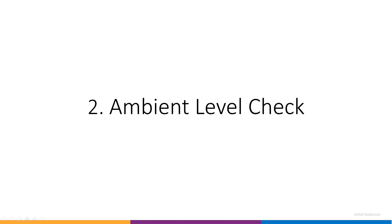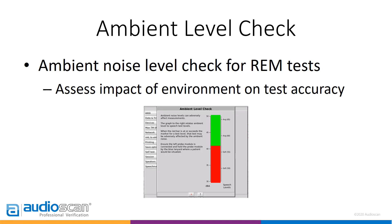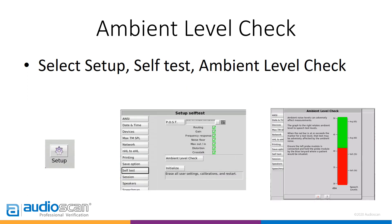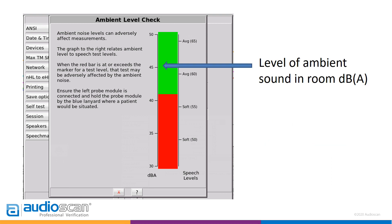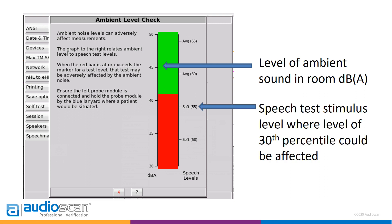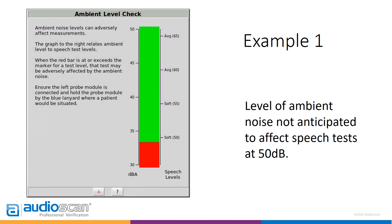Ambient Level Check. This feature is a test which measures the ambient noise level in the test environment to allow you to determine its possible impact on SpeechMap testing, particularly at soft input levels. To access the tool, open the Setup menu, select Self-Test, then click on Ambient Level Check. The red portion of the bar graph display represents the noise level in the room. The scale on the left shows the value in dB, A-weighted. The scale on the right shows the speech test level which could be affected by this noise level, based on the lowest levels of the speech stimulus, or the 30th percentile. In this example, the noise level is showing below the soft 50 marking, indicating that it's unlikely to impact testing at this level.